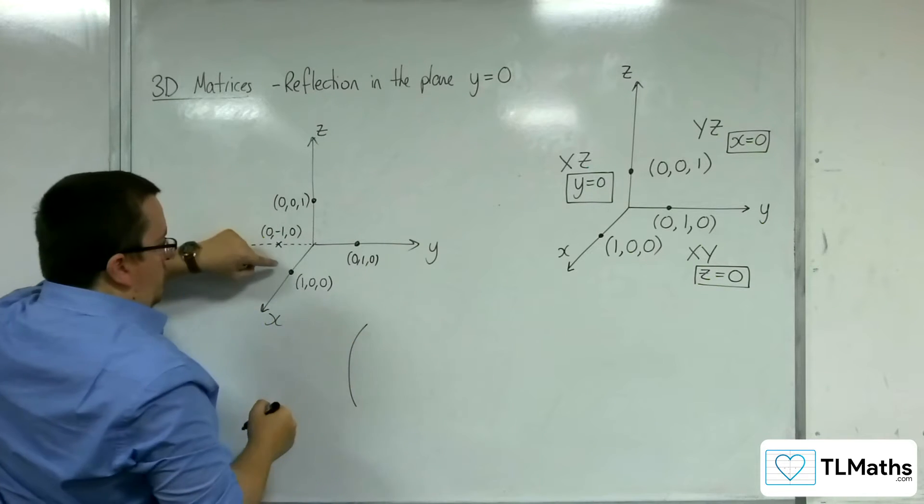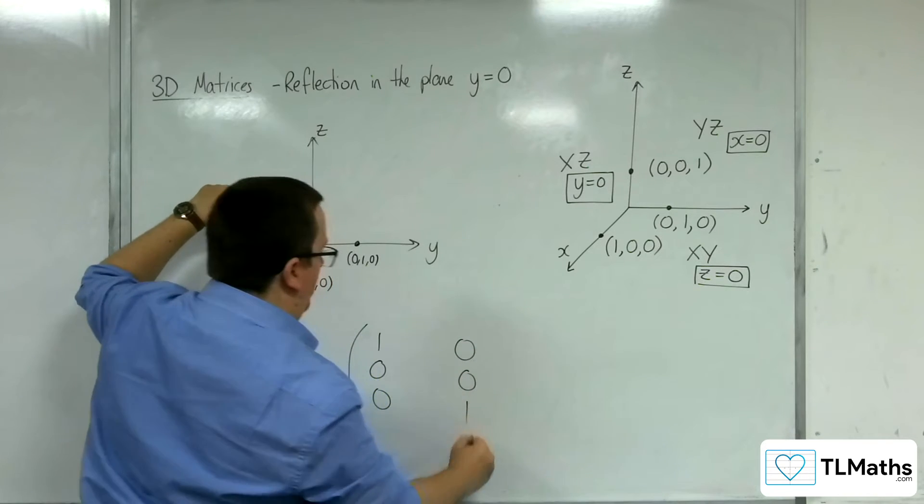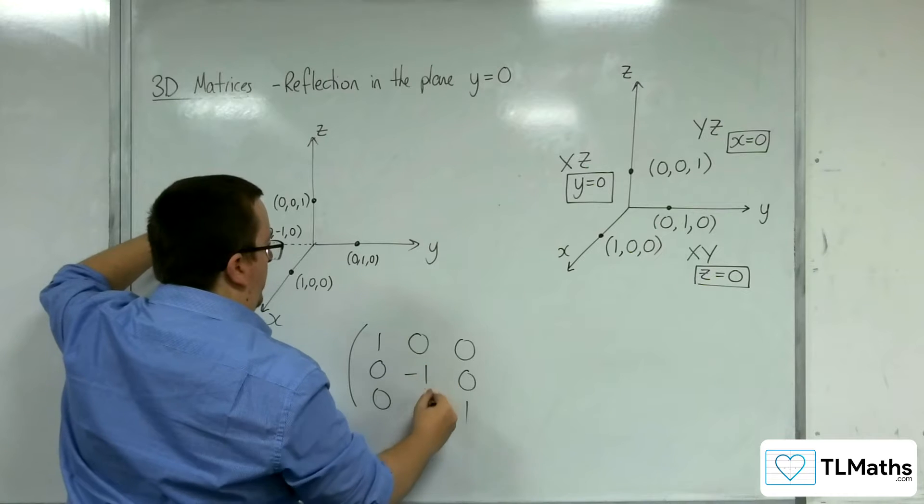So our matrix keeps 1, 0, 0 fixed. It keeps 0, 0, 1 fixed, but changes 0, 1, 0 to 0, minus 1, 0.